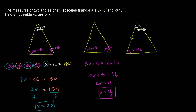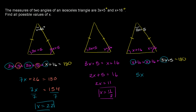Then we do our third scenario. If this base angle is x plus 16, then this base angle is also x plus 16 — they are congruent. All of these angles have to add up to 180 degrees. So we have x plus 16, plus x plus 16, plus 3x plus 5, all equal to 180 degrees.